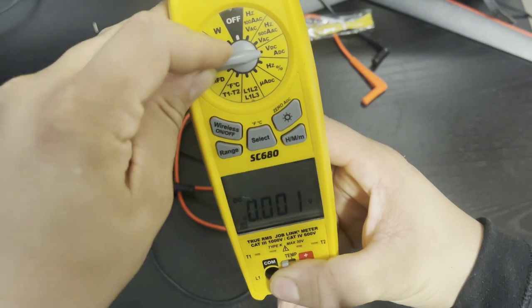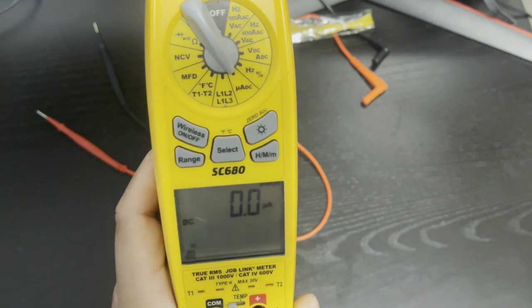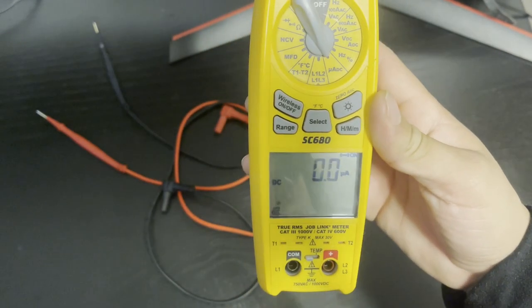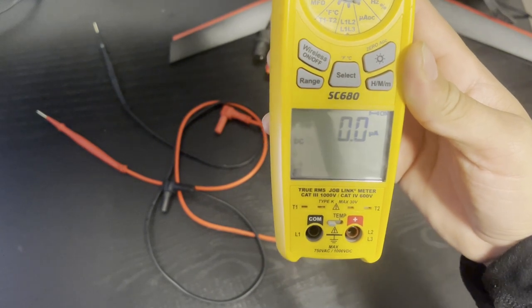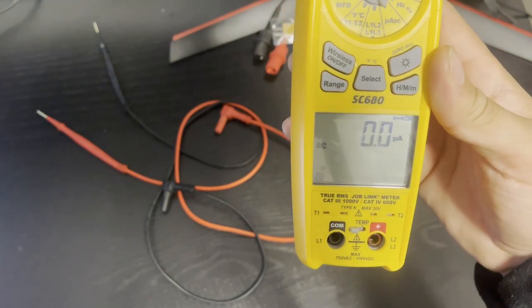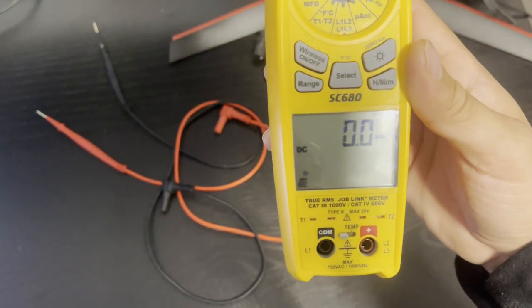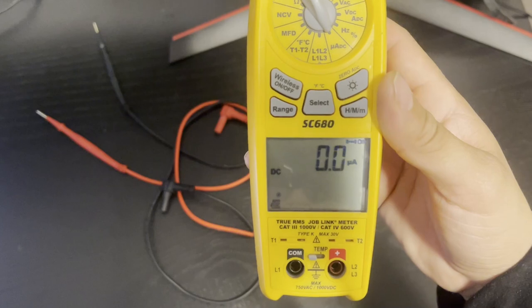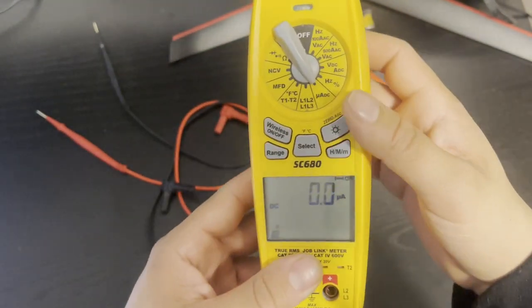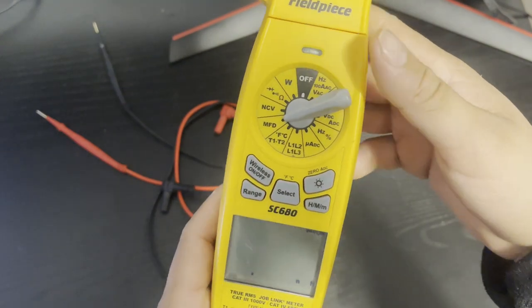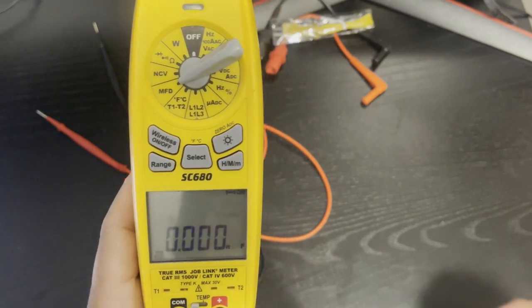The other thing that I use in resi as well is this, I believe it is called milliamps or microamps. I really know it just from doing flame sensors, I think it's called microamps. When I'm trying to check for flame rectification, I think this is a really cool thing to have.